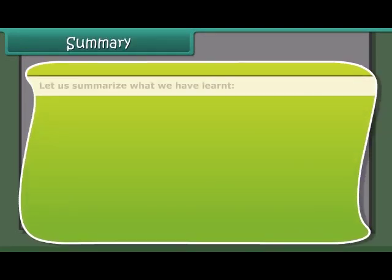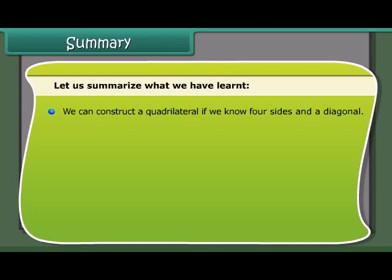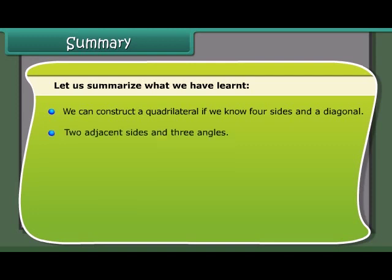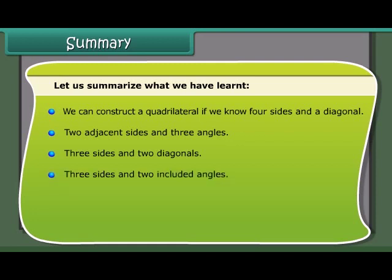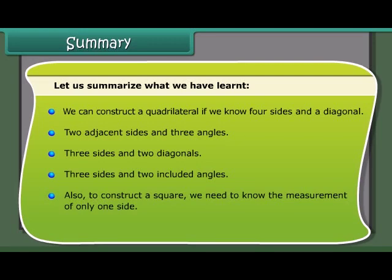Summary: We construct a quadrilateral if we know four sides and a diagonal; two adjacent sides and three angles; three sides and two diagonals; or three sides and two included angles. To construct a square, we need only the measurement of one side.